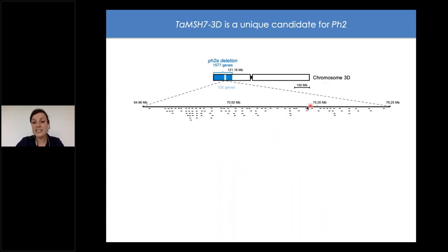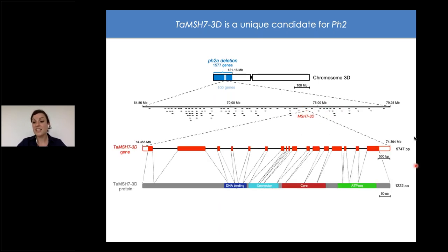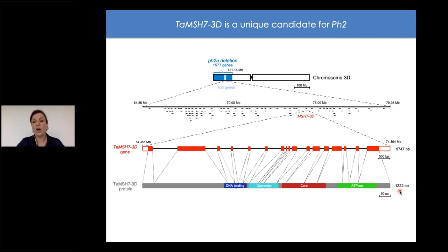Using in-depth mutant characterization, we had 24 candidates; using deletion lines, we had 100 candidates. Comparing the two lists, we found only one gene present in both: MSH7-3D, localized within the 14.3 megabase region. This gene is about 10 kb long, contains 17 exons, and encodes a 1,200 amino acid protein with a DNA-binding domain and an ATPase domain.